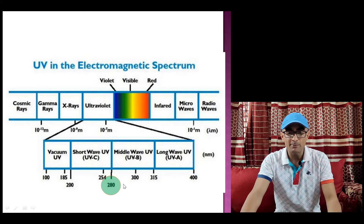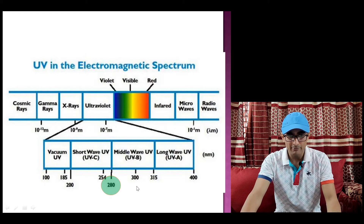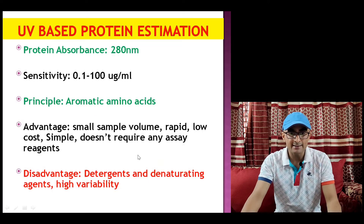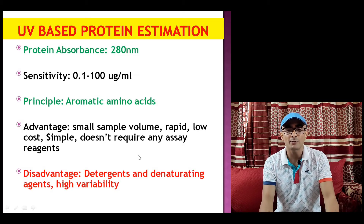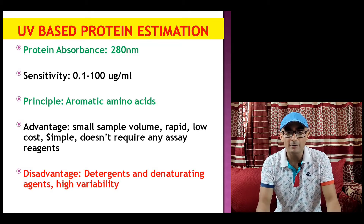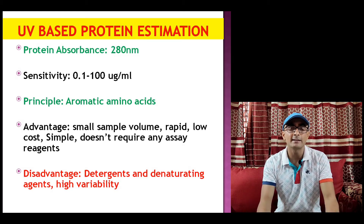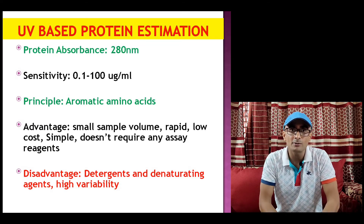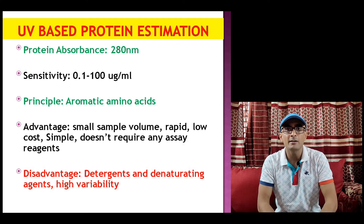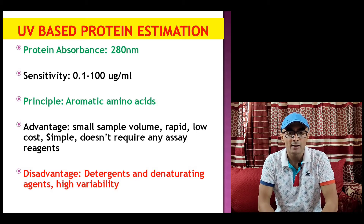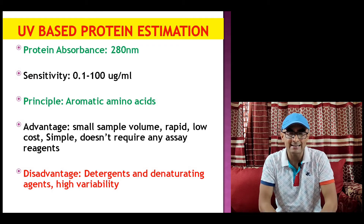Proteins absorb UV at 280 nanometer wavelength, and that is because of the presence of aromatic amino acids in the protein. Among the aromatic amino acids, tyrosine and tryptophan are the major absorbers of 280 nanometer radiation. Cysteine also absorbs to a lesser extent at 280 nanometer wavelength.